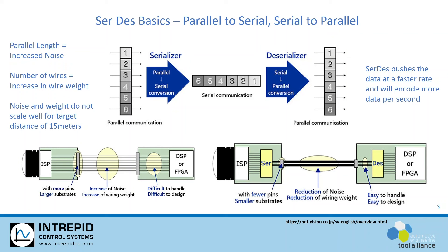The back channel in camera systems can be used to control general purpose IO on either side of the link. Once a link is established, the back channel can be used to bring a device out of reset, negotiate a monitor resolution with a video sync device, or communicate over an inter-integrated circuit, or I2C, chip-to-chip communications.